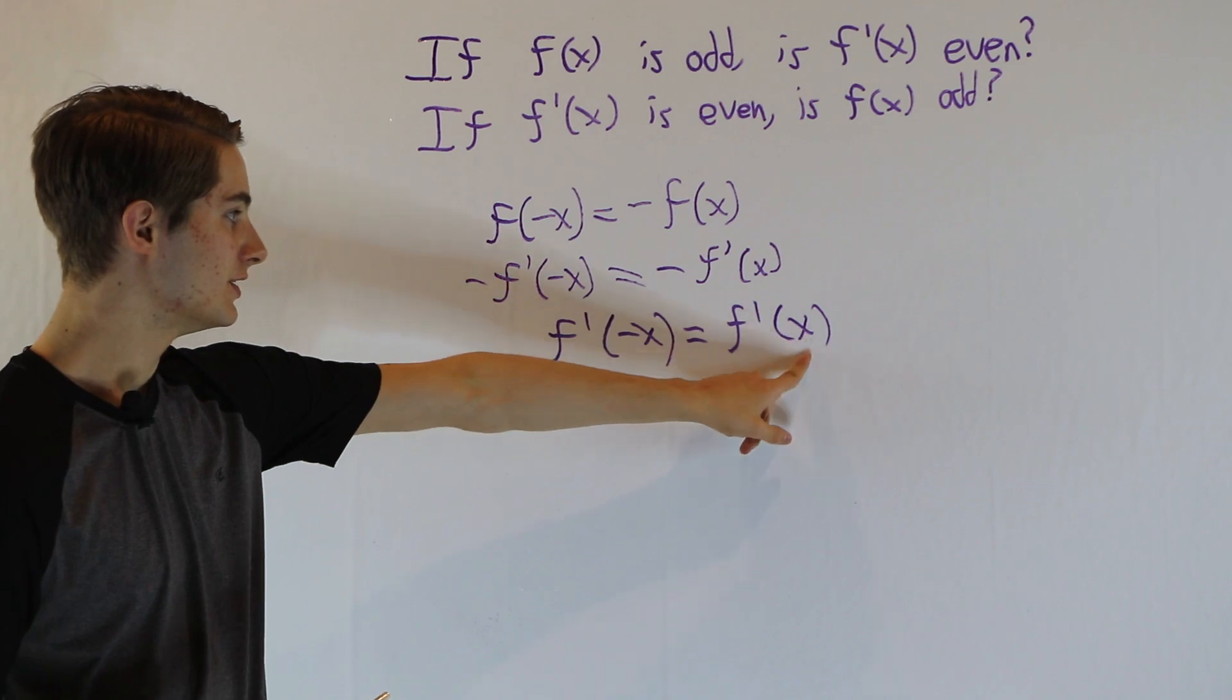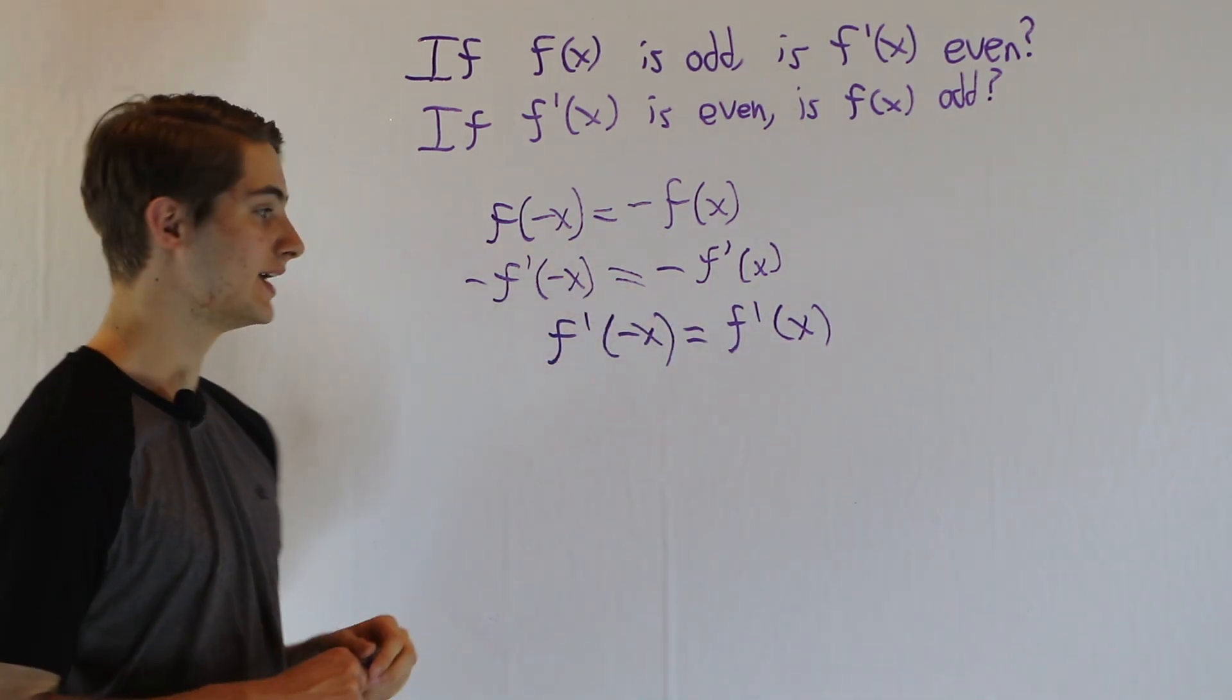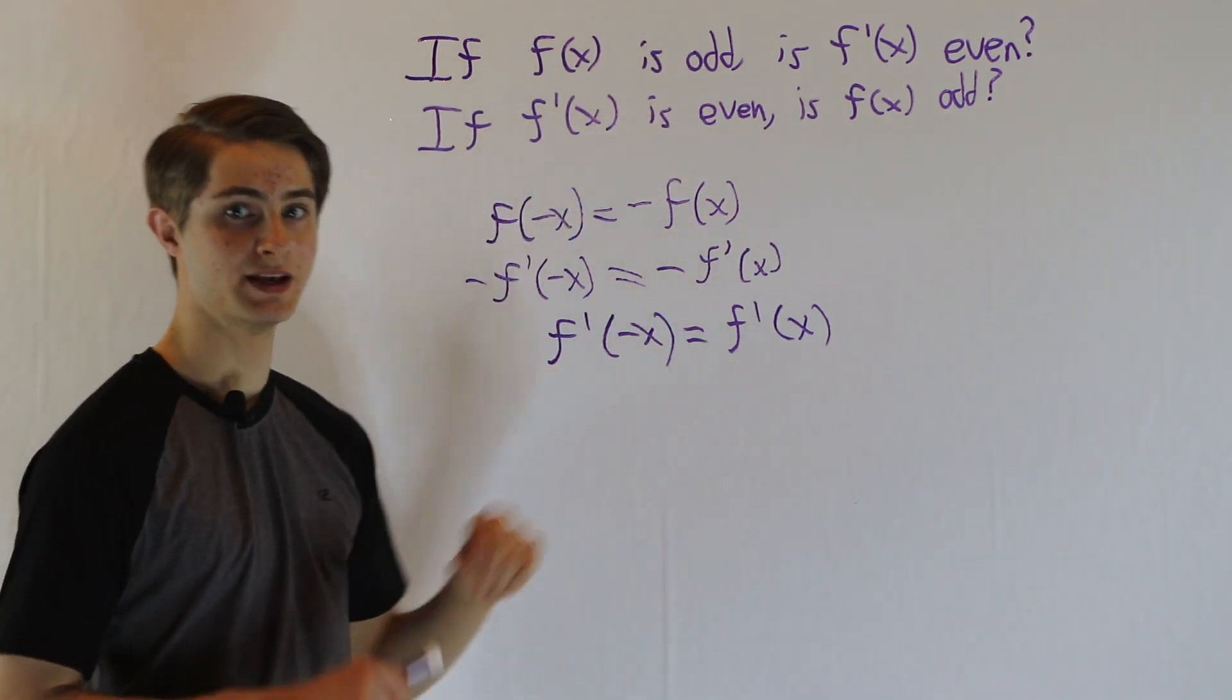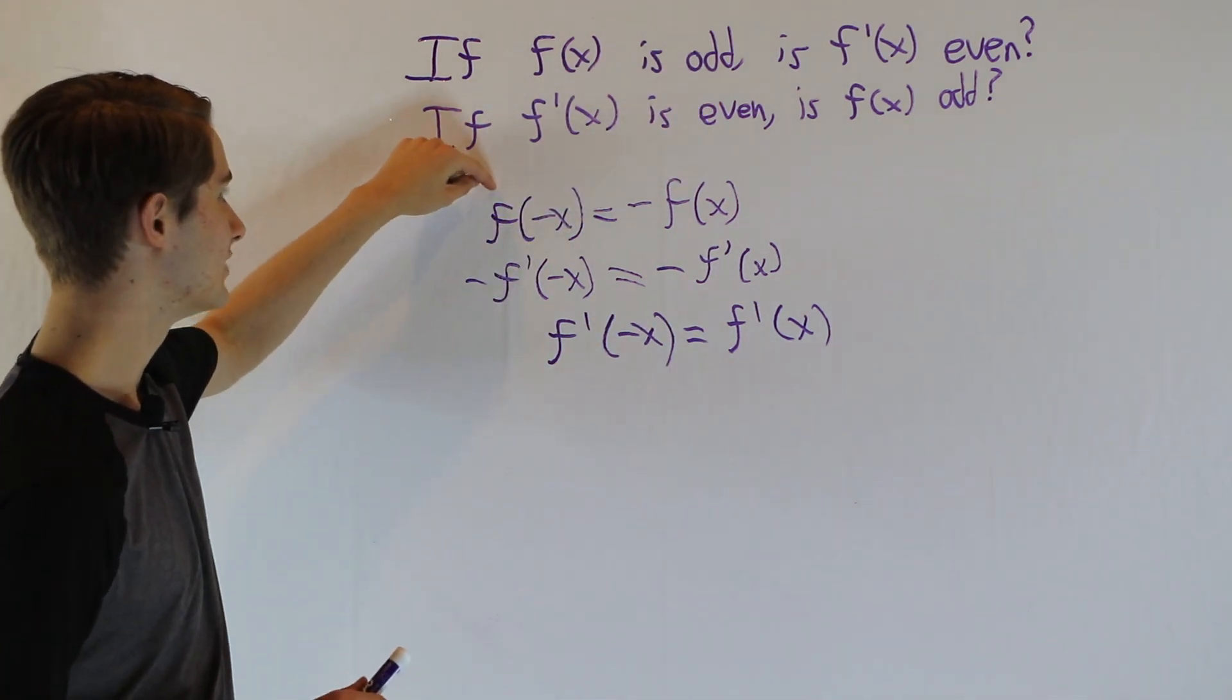An even function has the same value at positive and negative x's, which means that our derivative f prime of x is indeed even in all cases where f of x is odd.